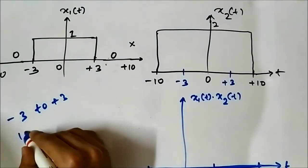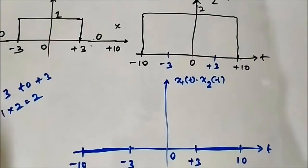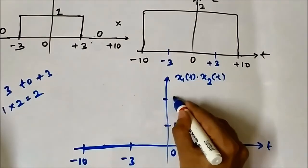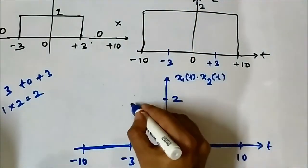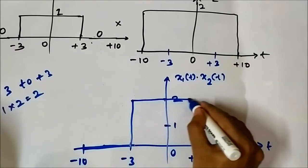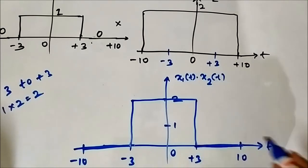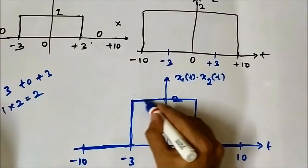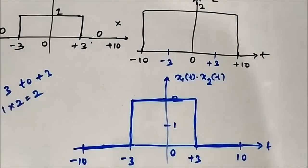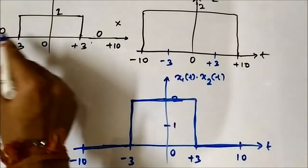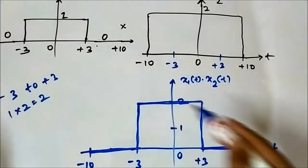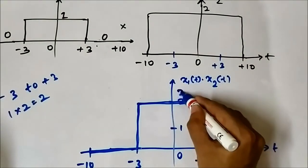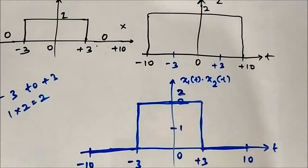From minus 3 to plus 3, x1(t) into x2(t) means 1 into 2 which equals 2. So the amplitude increases to 2 in this interval. The output is: from minus 10 to minus 3 and plus 3 to plus 10 it is 0, and from minus 3 to plus 3 it is 2. This is signal multiplication on some random signals.